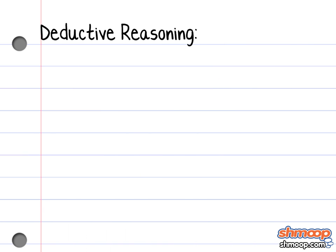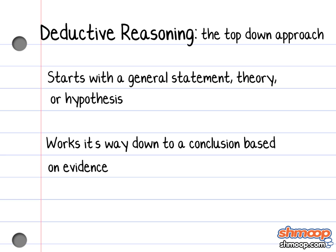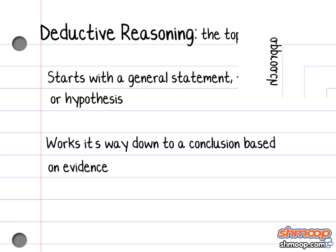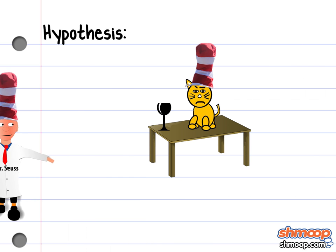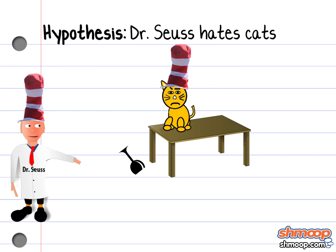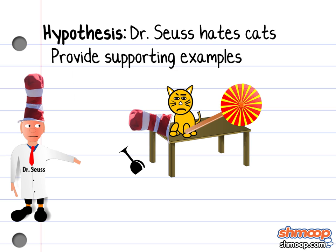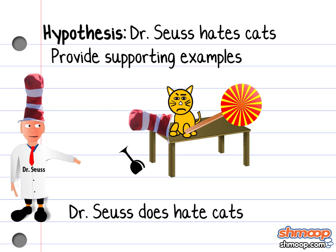Deductive reasoning, otherwise known as the top-down approach, starts with a general statement, theory, or hypothesis, and then works its way down to a specific conclusion by examining various pieces of evidence. For example, if you hypothesize that Dr. Seuss hates cats and you provide examples from The Cat in the Hat that you feel support that hypothesis, you can deduce that Dr. Seuss does, in fact, hate cats.